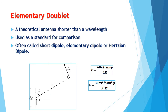Elementary AA is a theoretical antenna shorter than a wavelength, used as a standard to which all other antenna characteristics can be compared to. This is often referred to simply as short dipole, elementary dipole, or Hertzian dipole.